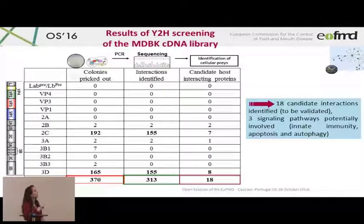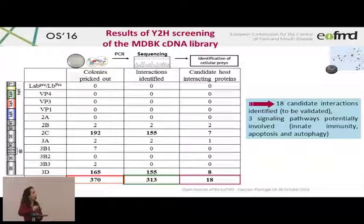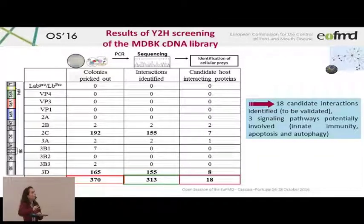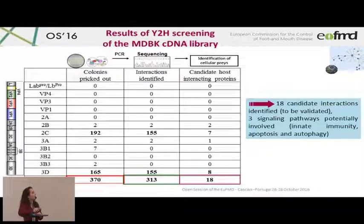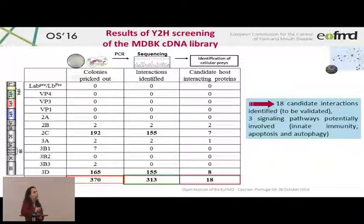We tested all the viral prey and obtained the following results. The main colonies were obtained for the 2C protein, where we identified seven candidate interactions — some cellular prey already identified in the literature and some new ones. For the 3D protein we obtained 165 colonies and identified 155 interactions, leading to identification of eight candidate interactions. Overall we have 18 candidate interactions to be validated biochemically and functionally, potentially affecting three signaling pathways: innate immunity, apoptosis, and autophagy.